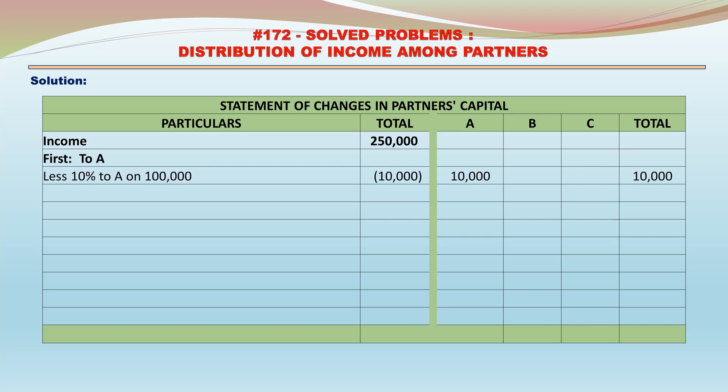First, less 10% to A on 100,000: 10% of 100,000 is 10,000, less from the profits and allocated to A: 10,000. Less 20% to A over 100,000, that is on 150,000: 20% is 30,000, allocated to A.